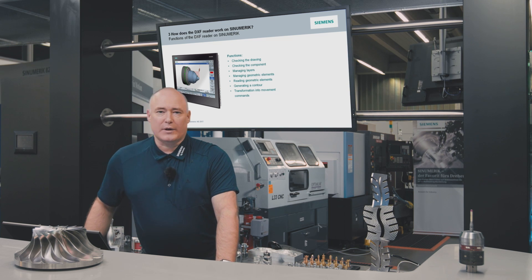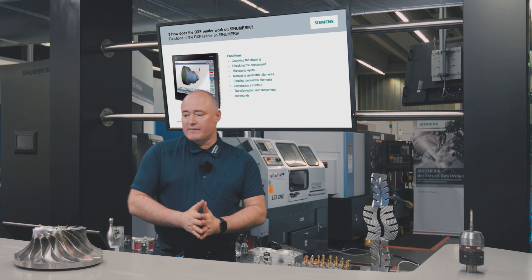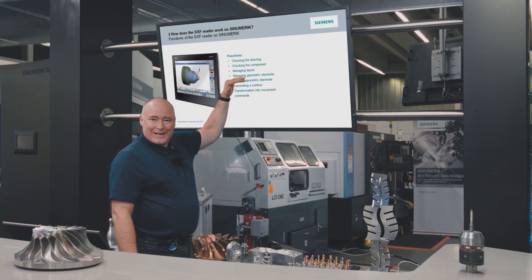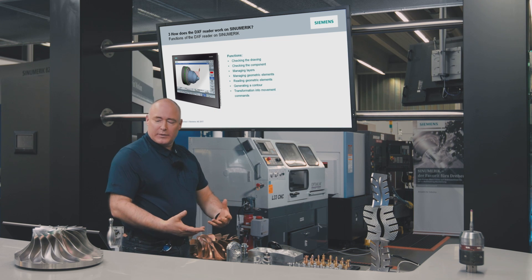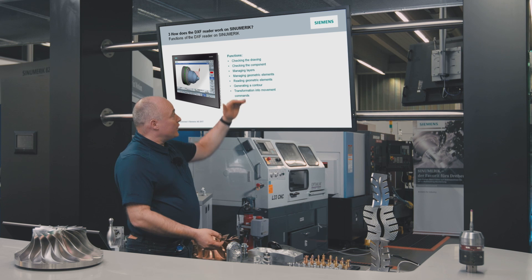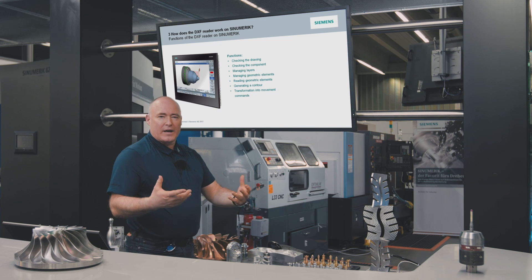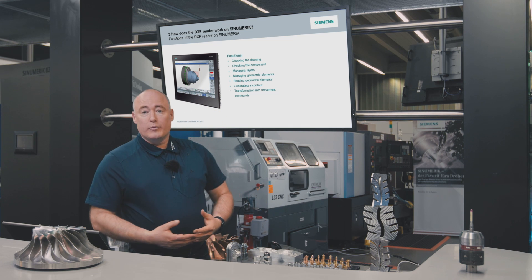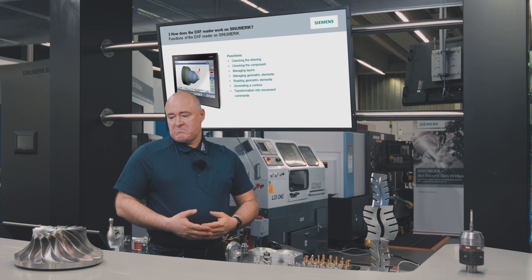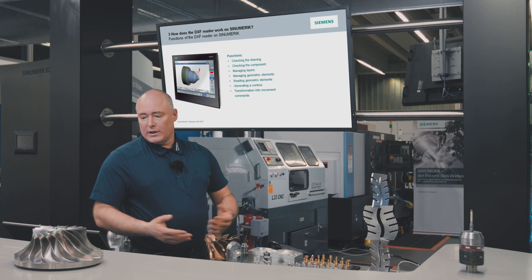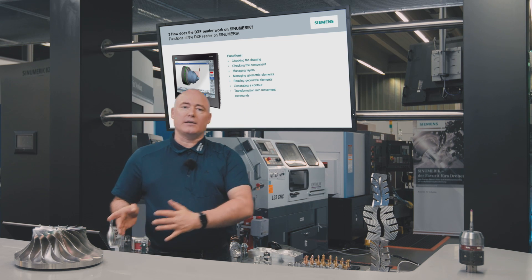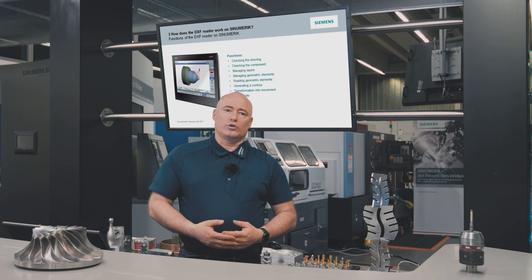Now, having covered the practical simulator example, here is a short summary. We can test drawings as regards the actual component after the simulation, on the correct toolpaths, collision avoidance, and we can manage the layers while processing the DXF data. The same applies to the geometric elements. As shown, we can generate contours and then select to output them in ShopMill, ShopTurn, or in the G-code as root commands.